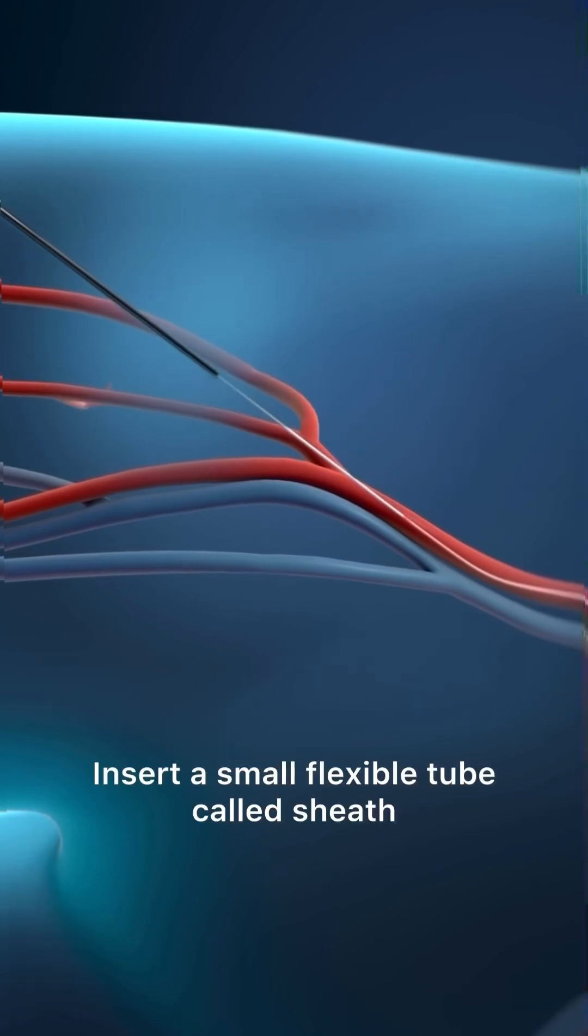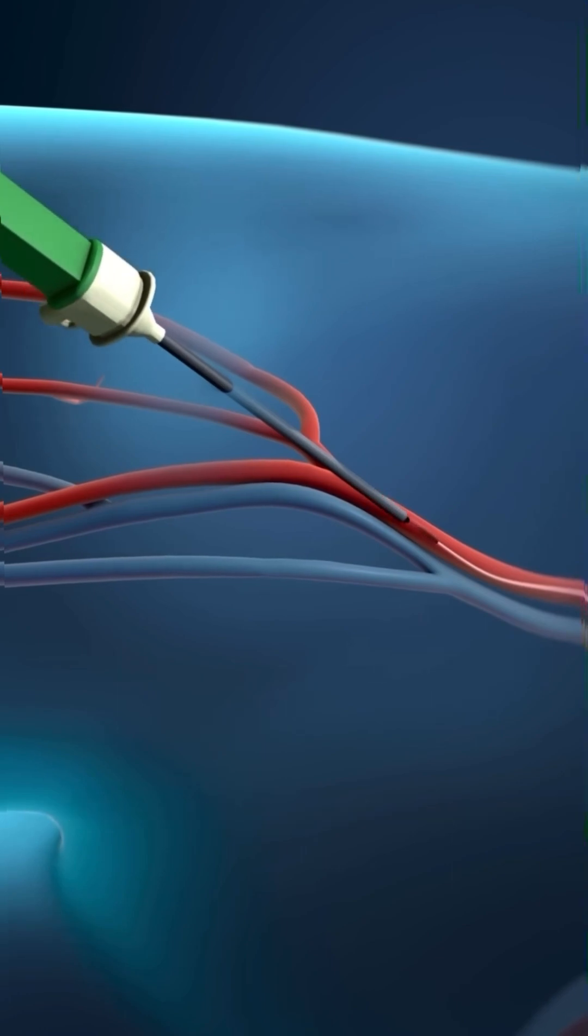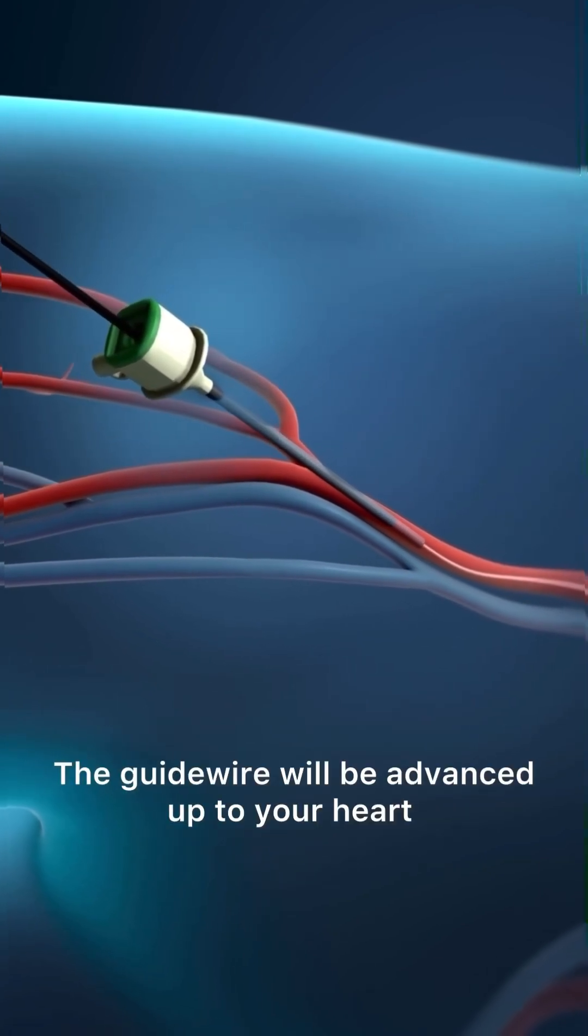Insert a small flexible tube called a sheath. This permits access into the artery. The guide wire will be advanced up to your heart.